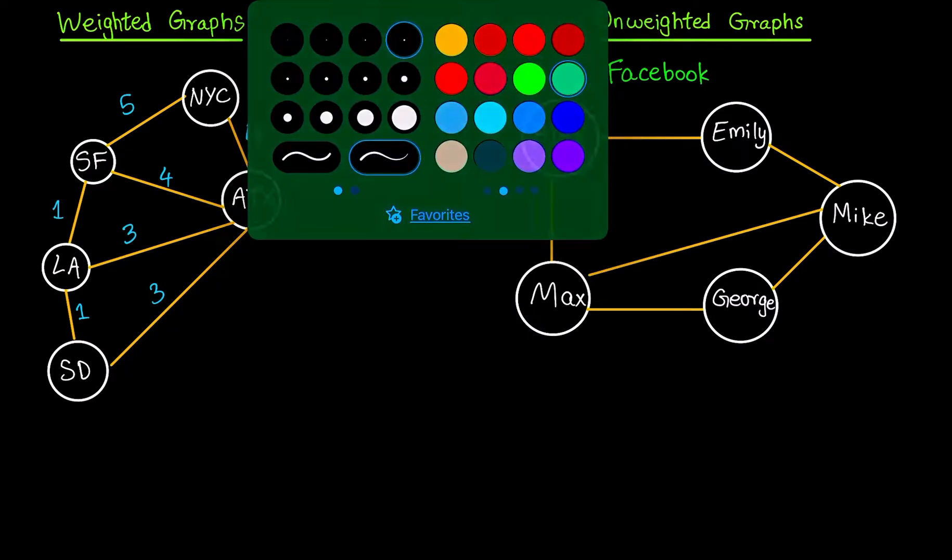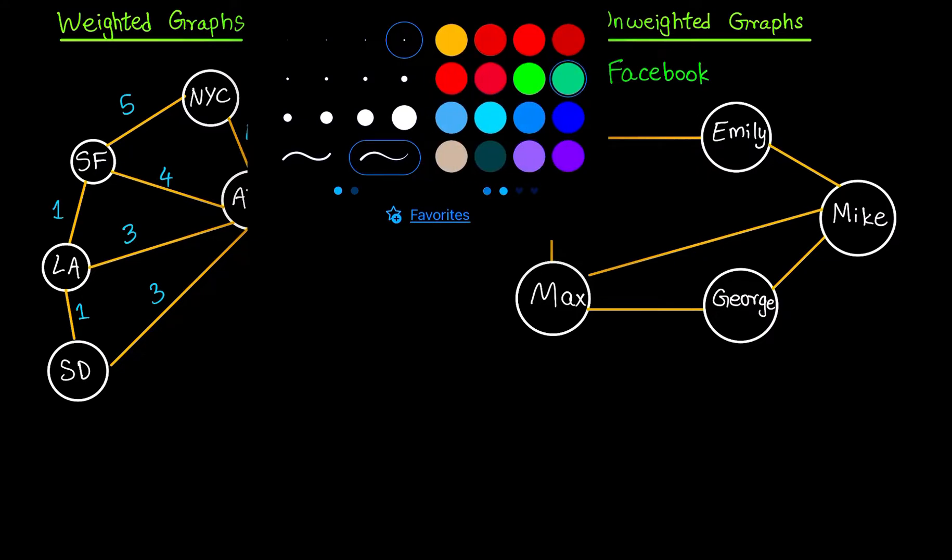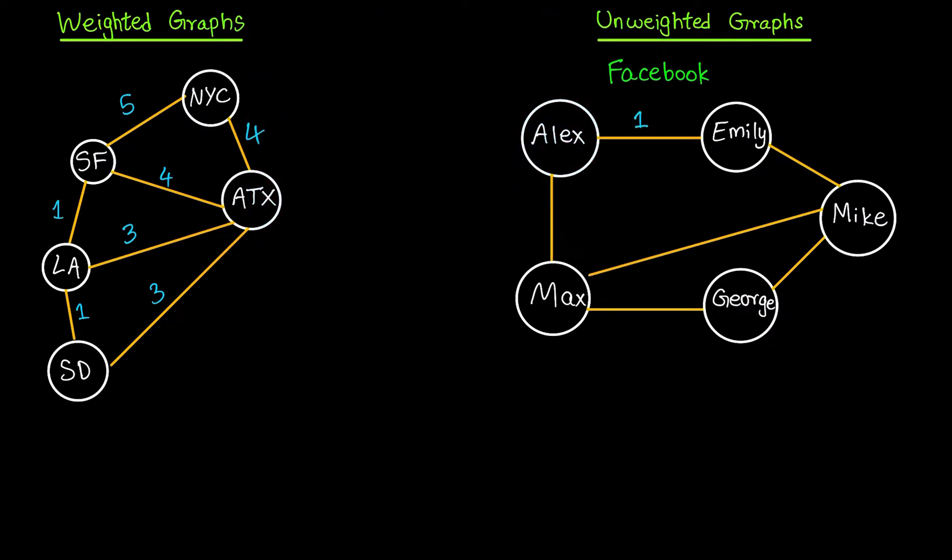All the edges would be of weight one. Because this is an undirected graph, by default all the weights will be one and there is no particular reason to rank one friendship more than another. All the friendships within the friend circle have the same value of one.